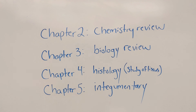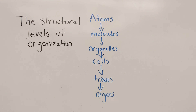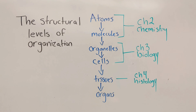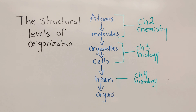Why is that? It goes back to something from chapter one: the structural levels of organization. Atoms are the smallest unit of matter; they come together to become molecules. Molecules make up organelles. Organelles make up cells. A group of cells working together to perform a common function is a tissue. Multiple tissue types coming together to perform a common function is an organ. For every chapter for the rest of the book, you're going to be zooming in and out along those structural levels. If you don't have the basic vocabulary for chemistry, biology, and histology, there's no way you can understand how an organ system functions — that is why they make you go through all this first.